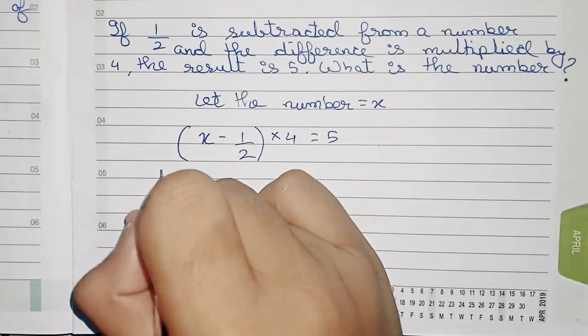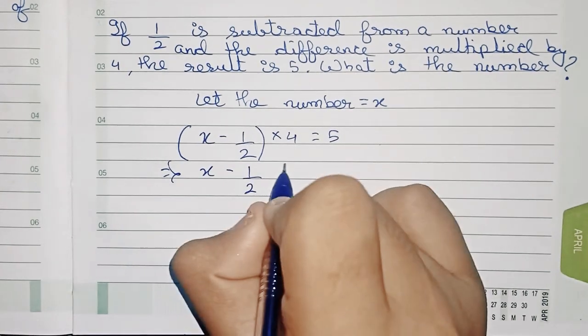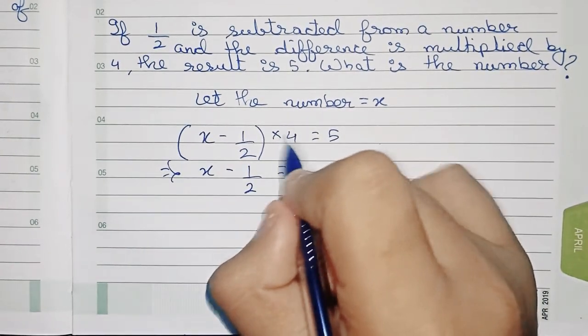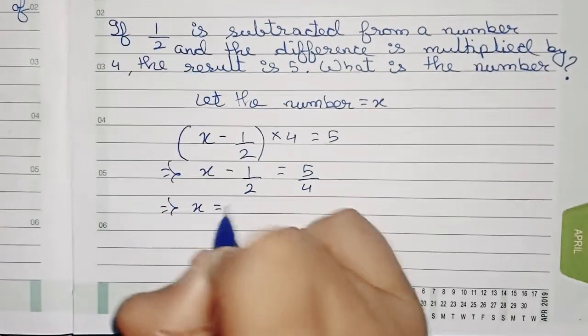So now solve this. First we remove the bracket, so it becomes x - 1/2 equals to... Now we're taking the ×4 to the right side, so it goes for division, so it becomes 5/4.